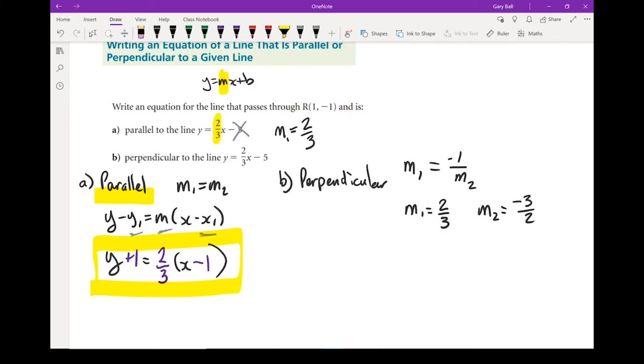So just like before, I now have a slope and a point. Put it into the equation. y minus y1 equals m times x minus x1.